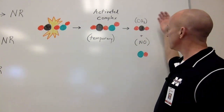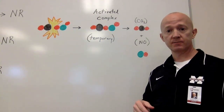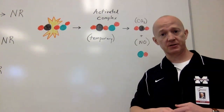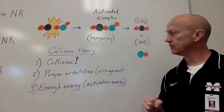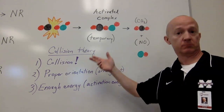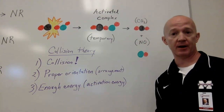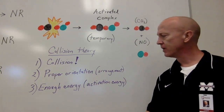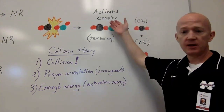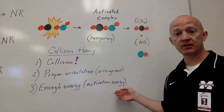It could be that the activated complex goes back to being reactants, or in our case it will move forward and become carbon dioxide and nitrogen monoxide, our products. To sum up collision theory, three things have to be involved: one, we need a collision; two, we have to have proper orientation of the compounds; and three, we have to have enough energy for those compounds to come together and form the activated complex. We call this energy activation energy.